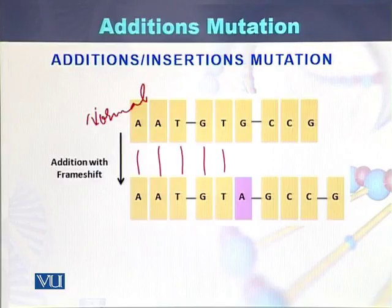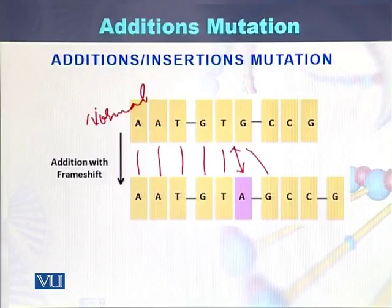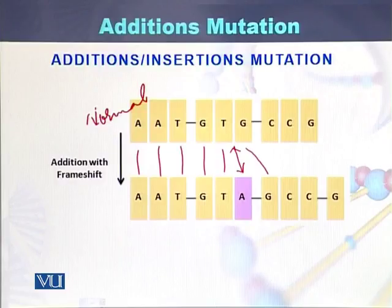If we do a comparison, this G is actually this one. So between T and G, a new nucleotide has been added, that is adenine. So when there is addition of a nucleotide, that can be in the form of a single nucleotide or it can be in the form of multiple nucleotides. Such mutations are called addition mutations.